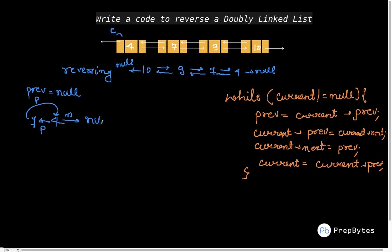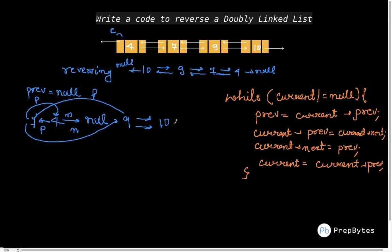Then we do current.next = prev, so the next of node 4 becomes null. The rest of the list remains as is: the next of 7 points to 9, the prev of 9 still points to 7, and we have node 10 at the end. We then update current = current.prev, so now node 7 becomes our current.